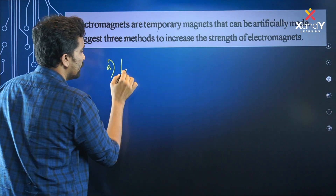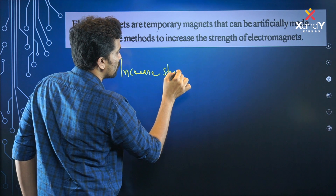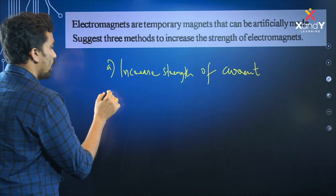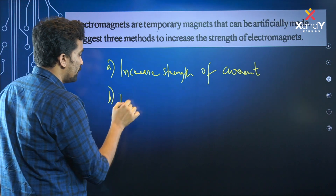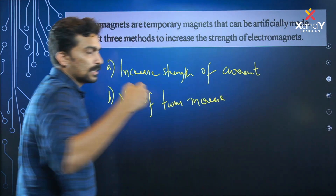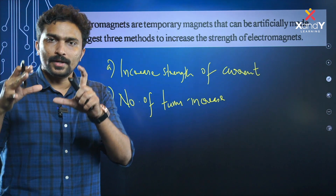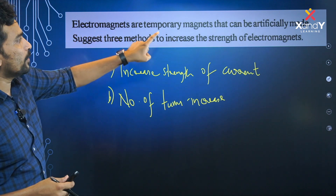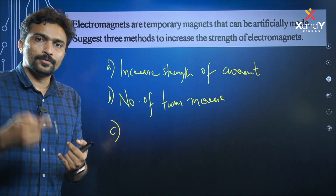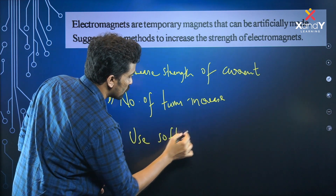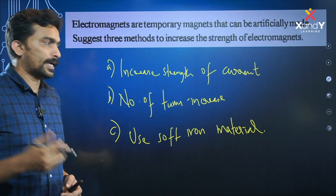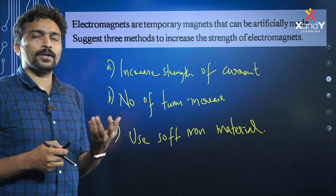We have the power to increase. Increase strength of current is one of the best ideas — current and strength increase that is the electromagnet power. Number of turns increase — number of turns increase — electromagnet strength increase. Use soft iron material — strong electromagnet. Many materials use soft iron.